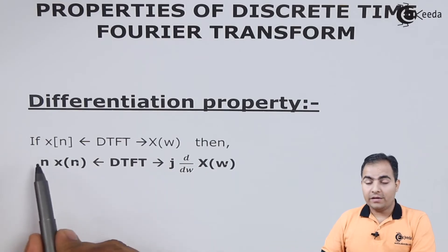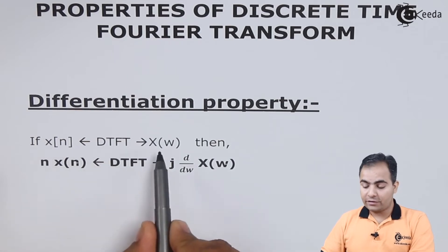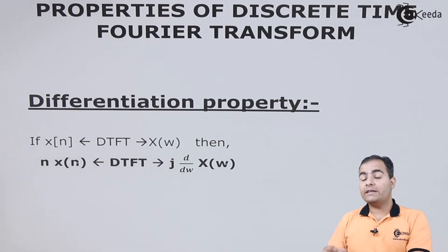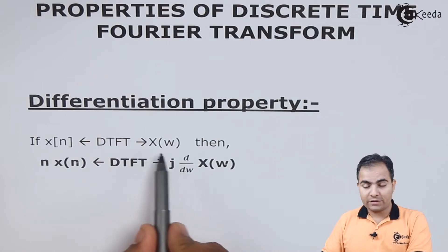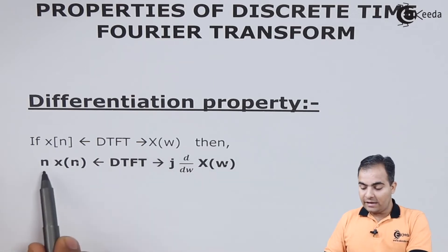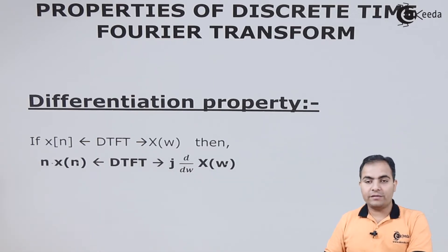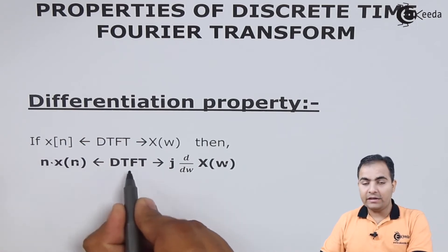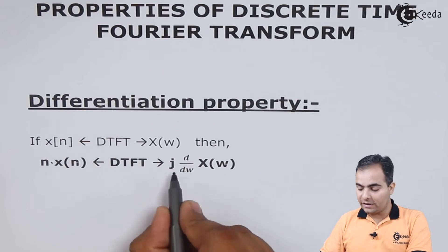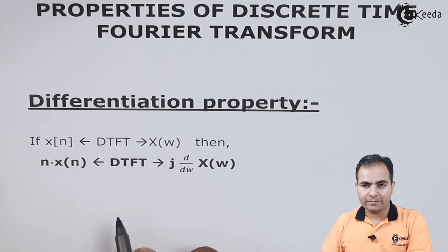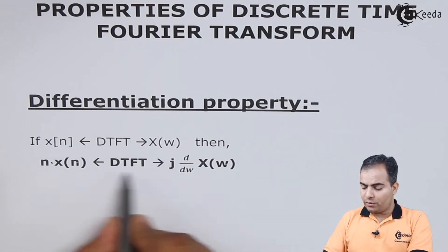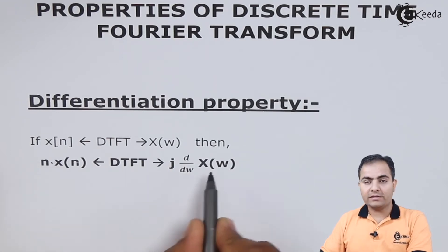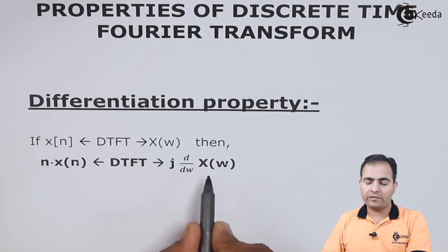If x of n has a DTFT of X of omega, then n times x of n has a DTFT equal to j times d by d omega of X of omega. This is the complete statement, and we are going to prove that n times x of n equals j times d by d omega of X of omega.